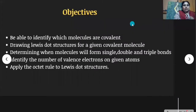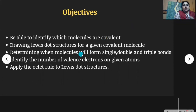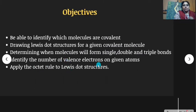These are the learning objectives from this topic. Students are able to identify which molecules are covalent and they can draw the Lewis dot structures for a given covalent molecule. They also determine when molecules will form single, double and triple bonds, identify the number of valence electrons on given atoms, and apply the octet rule to Lewis dot structures.